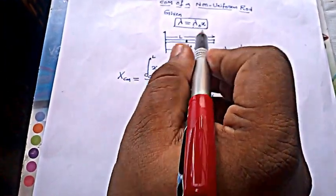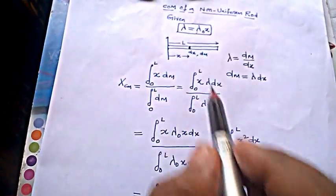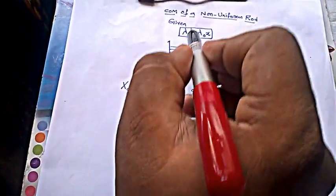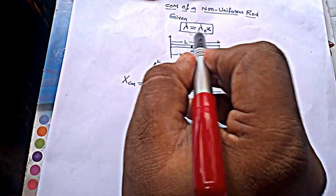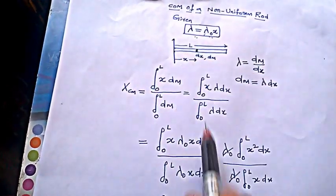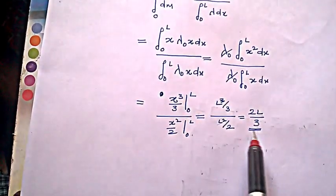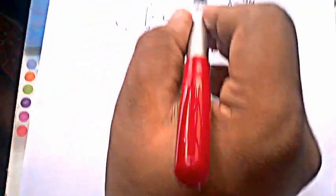It's not L by 2 — if the rod is uniform it lies at L by 2. Since it is non-uniform and the relation is given as lambda equals lambda naught into x, the center of mass lies at 2L by 3 from the origin.